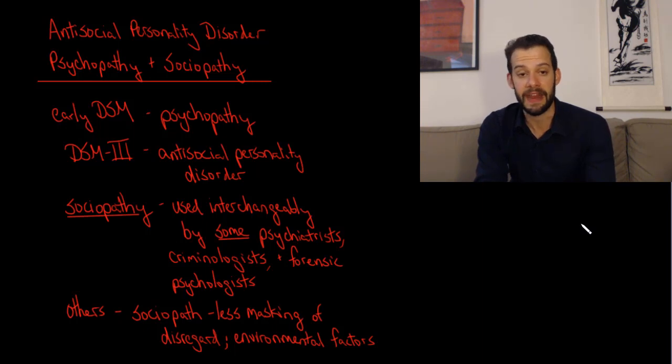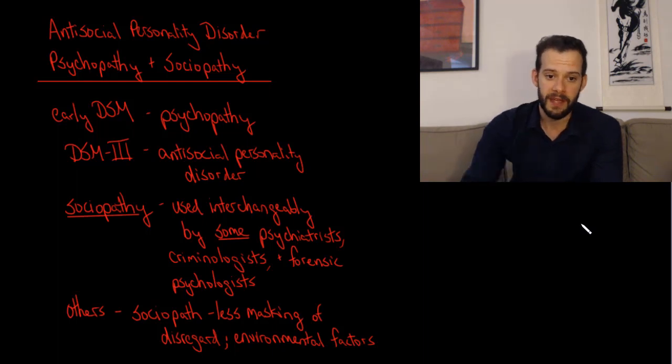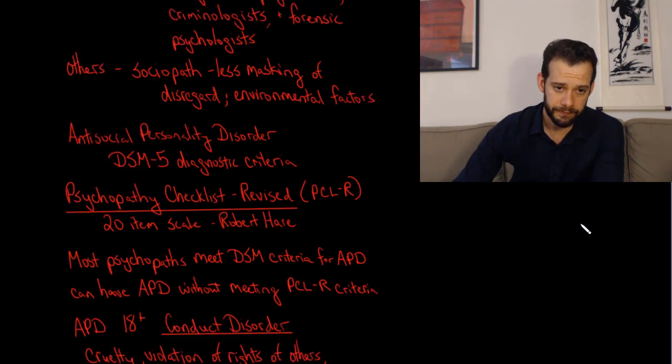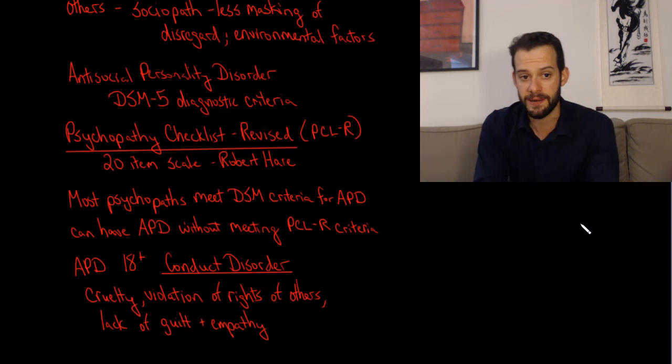My answer is really that I don't have a totally clear answer and it's going to depend on who you ask. Some people will use them interchangeably and others won't. And lastly, I'll mention the diagnostic criteria. For the diagnosis of antisocial personality disorder, this would use the DSM-5 diagnostic criteria that I just talked about earlier in the video. But this is not what would be used to determine whether someone is a psychopath or not.